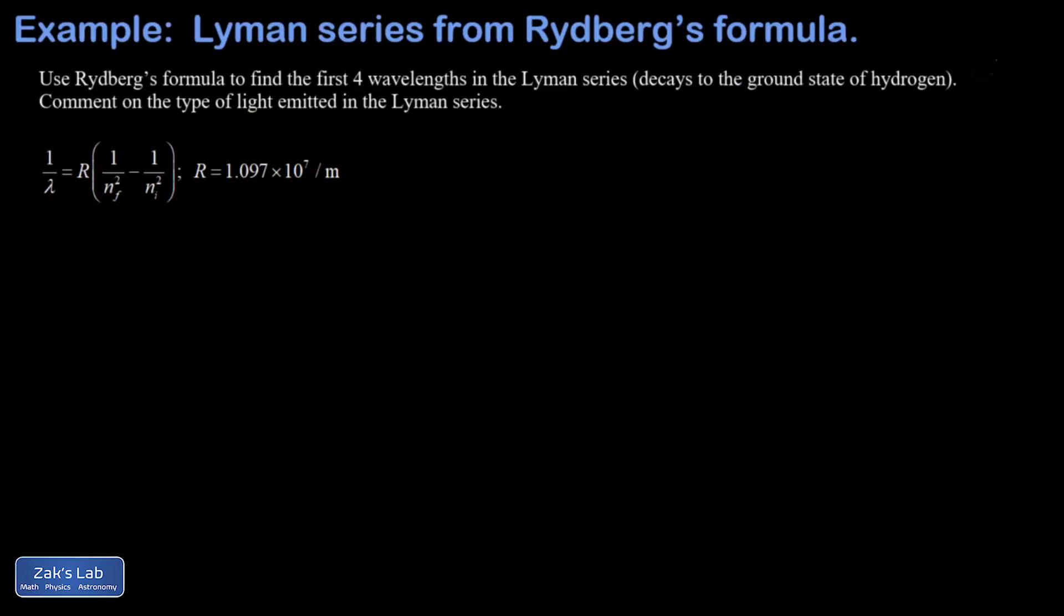Now just for historical accuracy, Rydberg's formula was deduced before anyone knew that the spectrum of hydrogen had anything to do with energy level transitions of electrons. This was just a pattern that was noticed in the data.